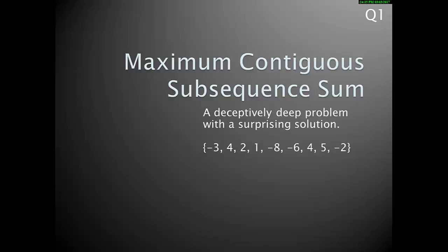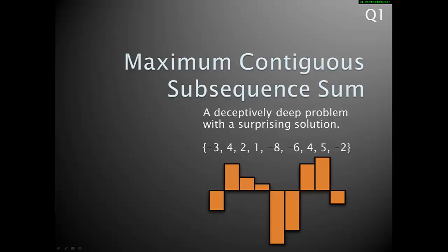So what we have is an array, essentially a sequence of numbers here in an array. Some of them are negative as we see, some are positive and so on. And what I want to do is figure out what is the Maximum Contiguous Subsequence Sum. Well, what does that mean?